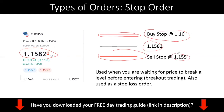You might ask: why would I want to pay more for something? You always want to buy at the lowest price and sell at the highest price. But you want to use a stop order when price is consolidating and you want to trade a breakout. It doesn't make sense to buy within the range because you're waiting for the breakout. So you can place a buy stop above the resistance and a sell stop below the support, so that if price breaks, you catch a nice breakout to the upside or downside.